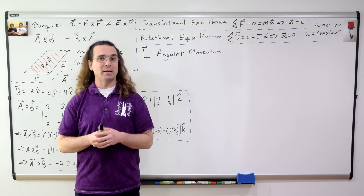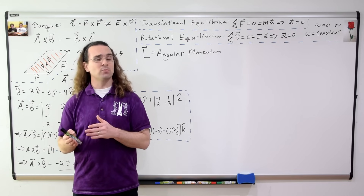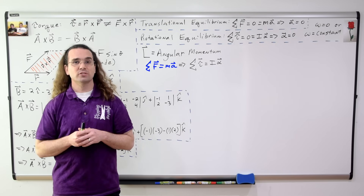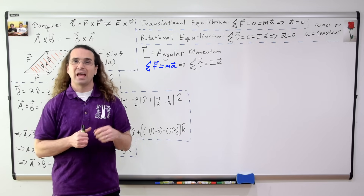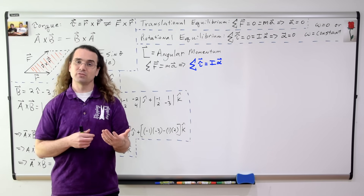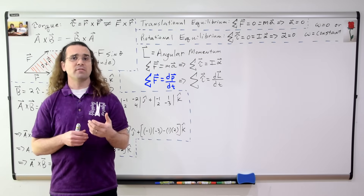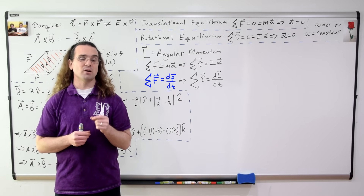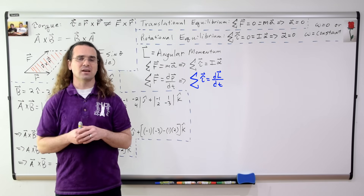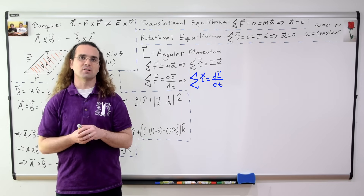Capital L stands for angular momentum, and angular momentum is a vector. In order to understand how angular momentum is related to torque, we are going to start with Newton's second law. Net force equals mass times acceleration is the linear form, and net torque equals moment of inertia times angular acceleration is the rotational form. However, neither of those two use derivatives. Net force equals the derivative of linear momentum with respect to time is the linear form, and net torque equals the derivative of angular momentum with respect to time is the rotational form, where torque and angular momentum are vectors.